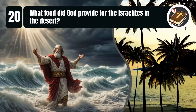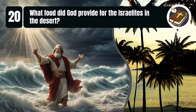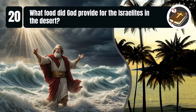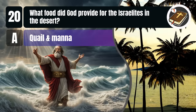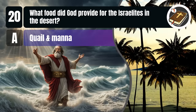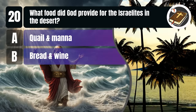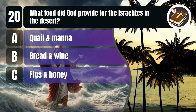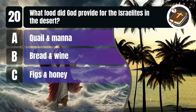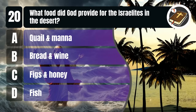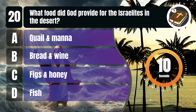Question 20. What food did God provide for the Israelites in the desert? A. Quail and manna, B. Bread and wine, C. Figs and honey, D. Fish. You get 10 seconds.